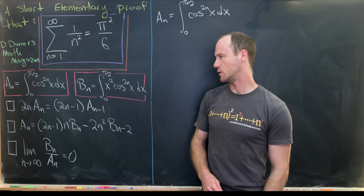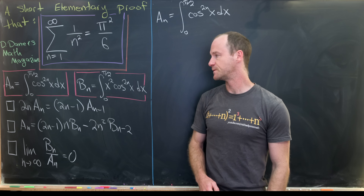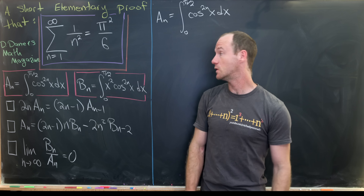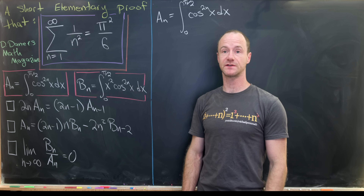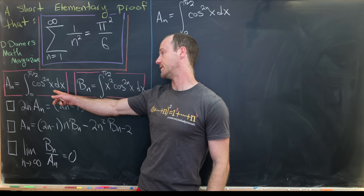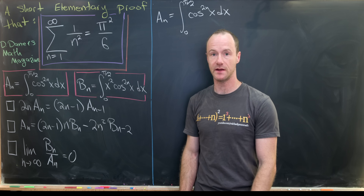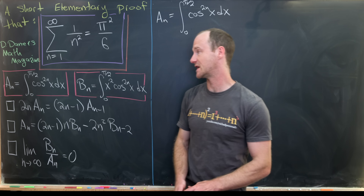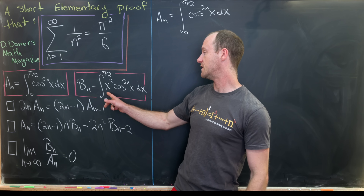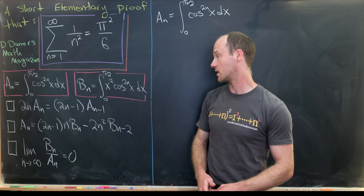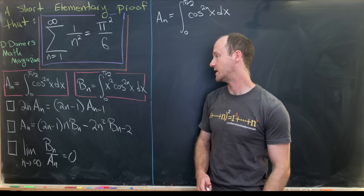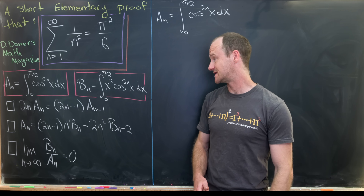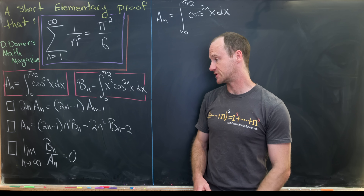So how are we going to approach this? First we're going to define two objects which are integrals. The first we'll call a_n, and the second we'll call b_n. a_n is the integral from 0 to π/2 of cosine to the 2n, and b_n is x² times cosine to the 2n integrated over the same interval. Then we're going to prove three preparatory results.